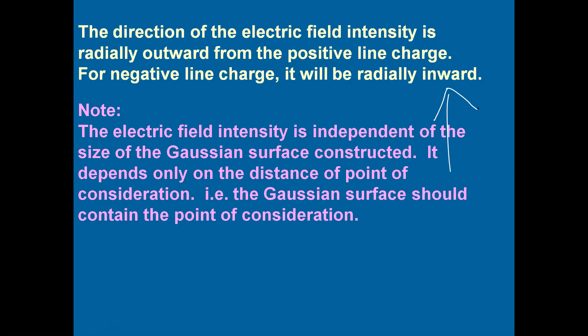One more important thing to note: in the equation for electric field, the value L does not appear. L represents the size of the Gaussian surface, and since it is absent from the final equation, electric field intensity is independent of the size of the Gaussian surface. However, E does depend on r, which is the distance of the point under consideration, so the Gaussian surface should contain the point of consideration.